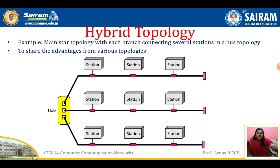We have seen four different topologies: mesh, star, bus, and ring. Every topology has its own advantages and disadvantages. Sometimes we need a hybrid topology, which uses more than one topology — mixing them together to create a beneficial method. For example, a hybrid of bus and star together takes advantages from both topologies.